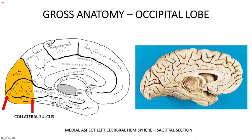Between the calcarine sulcus and the collateral sulcus is the lingual gyrus, which anteriorly continues into the parahippocampal gyrus. Between the collateral sulcus and the lateral temporal-occipital sulcus is the fusiform gyrus, which contains important areas for word-form recognition and face recognition. The fusiform gyrus is situated more towards the inferior part of the occipitotemporal junction.